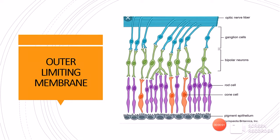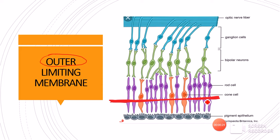Just inside the layer of rods and cones is the outer limiting membrane. As the name suggests, it is present towards the outer layers of the retina — towards the RPE. This membrane bisects the area of rods and cones at the level of their nucleus. There is also an internal limiting membrane, which will be explained later.